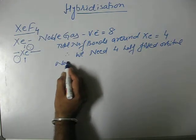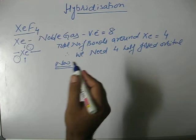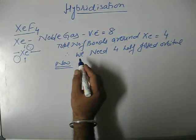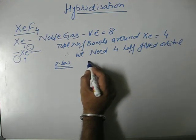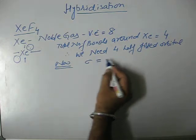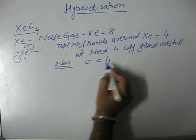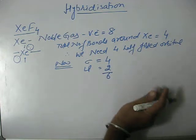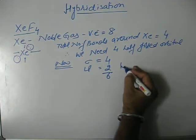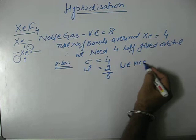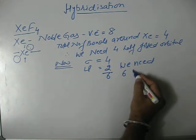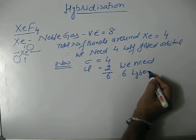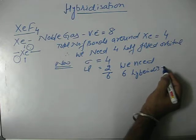Now, let's talk about how many hybridized orbitals we need around xenon. For that, we always count the total number of sigma bonds, which is 4, and lone pairs, which is 2. This total is 6, so that means we need 6 hybridized orbitals.